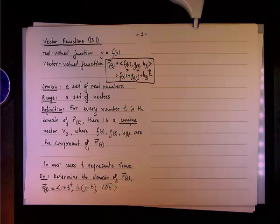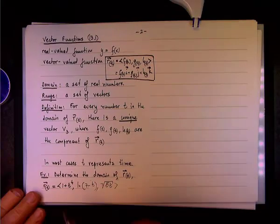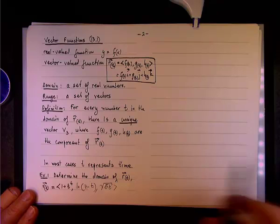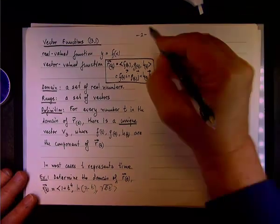We need to determine the domain of vector r of t with the component 1 plus t to the 4th, natural log of 7 minus t, and the square root of 5 over t.